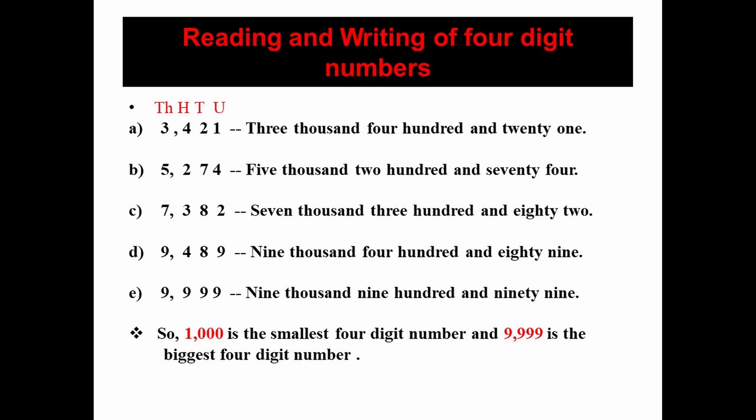First example: three thousand four hundred and twenty one (3421) — written in words as three thousand four hundred and twenty one. Second: five thousand two hundred and seventy four (5274). Next: seven thousand three hundred and eighty two (7382). Next: nine thousand four hundred and eighty nine (9489). Read along with me.